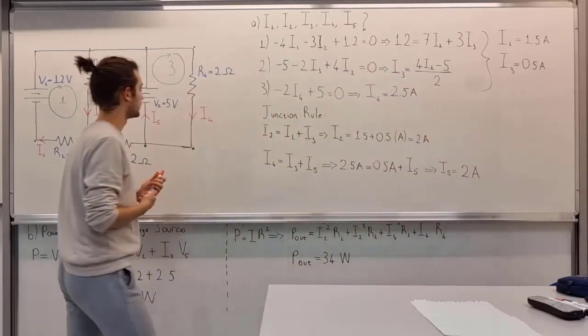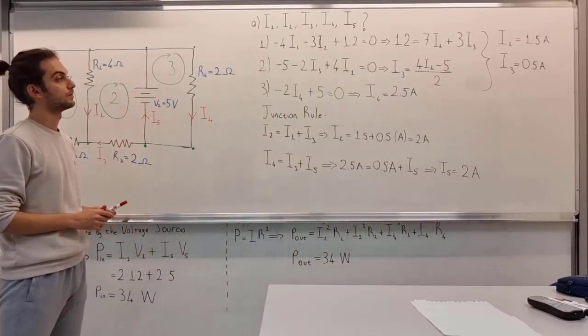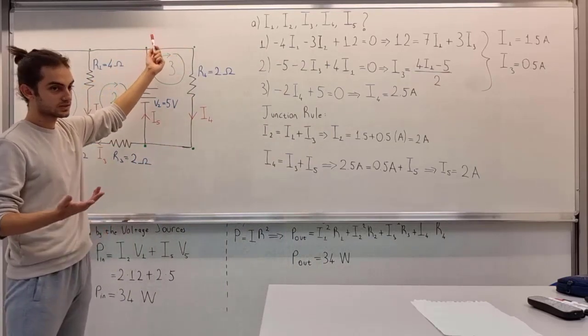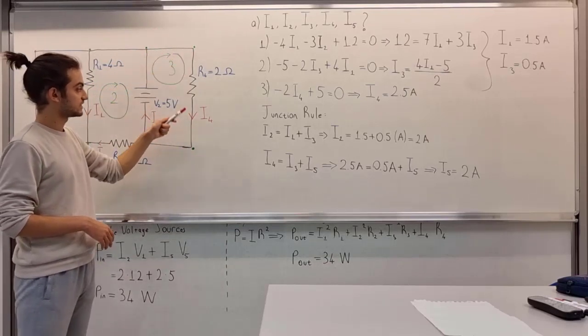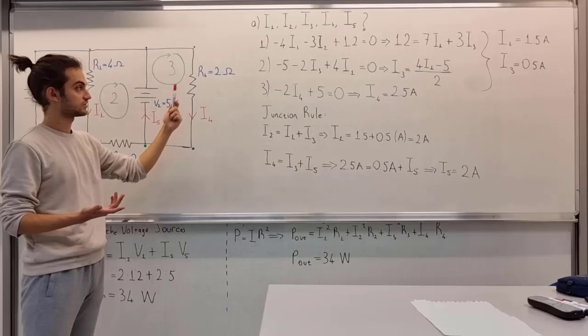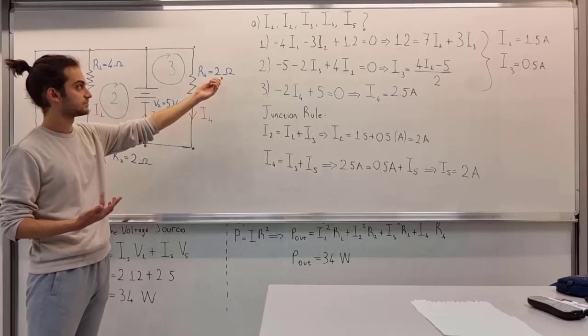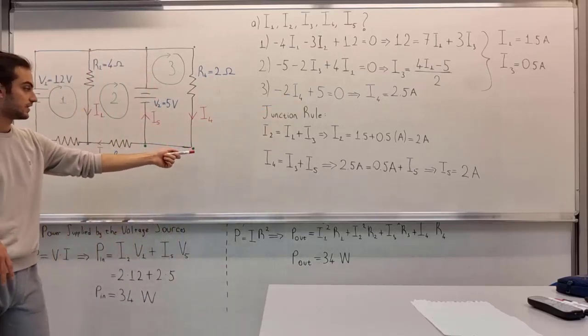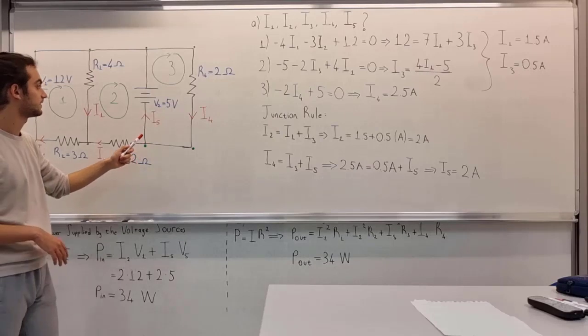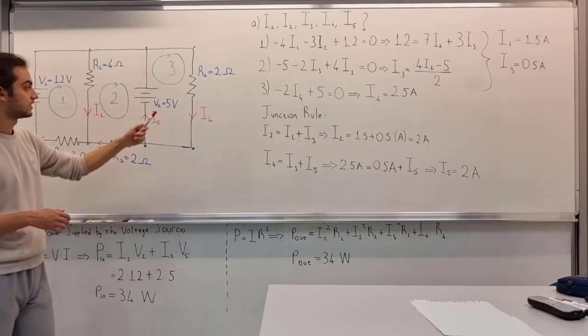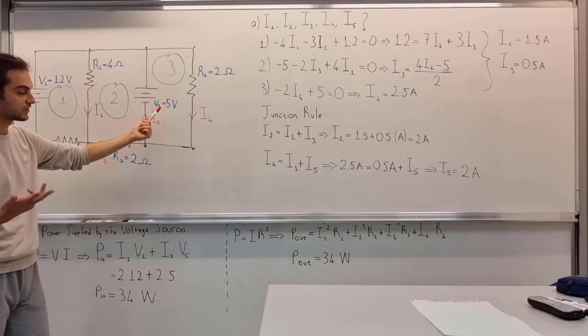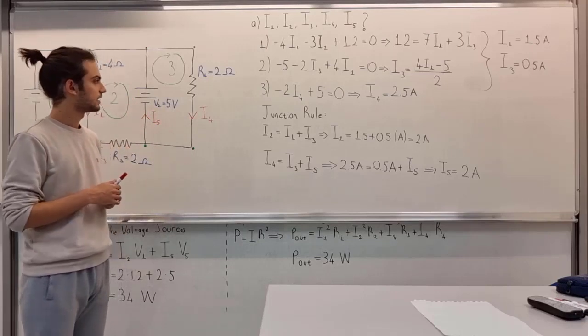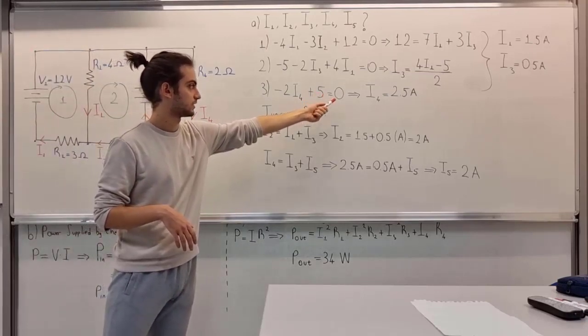Let's examine the third loop equation. From A to D, still nothing's there. B to C, we still have I4 in the same direction, which R4 is 2 ohms, so it comes with a negative sign. C to D, we have nothing again. From D to A, we have 5 volts in the same direction as we are going, and that makes plus 5 equals 0.